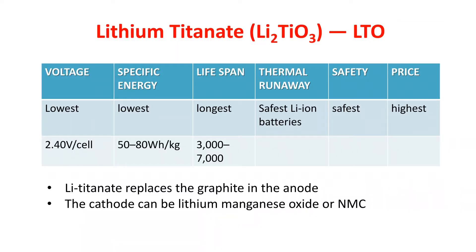Let us see the composition and properties of lithium titanate batteries, whose short form is LTO and its chemical formula is Li2TiO3. First we will talk about its components. In lithium titanate batteries, graphite — which is generally being used as anode in all other types of lithium-ion batteries — is being replaced by lithium titanate.